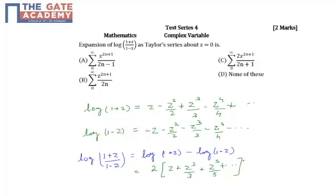So this is nothing but if I am generalizing this, we get the equation as summation n equal to 0 to infinity, 2 times z^(2n+1) divided by (2n+1).